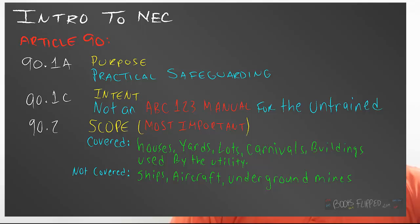What is covered? Well, houses — that's what we're doing. It also covers carnivals, and yeah, I know that's weird. And it covers lots, yards, buildings, and things that normally we would think it would cover. The things that it does not cover — how about ships? Never wired a ship. And aircraft — never wired an aircraft. And mines either. Or automobiles — doesn't work for this. Somebody else has another code standard for that.